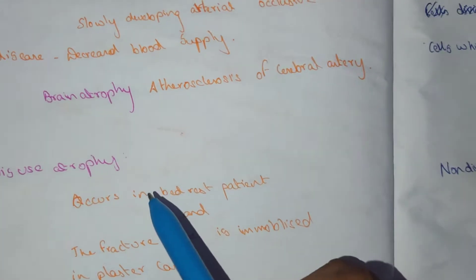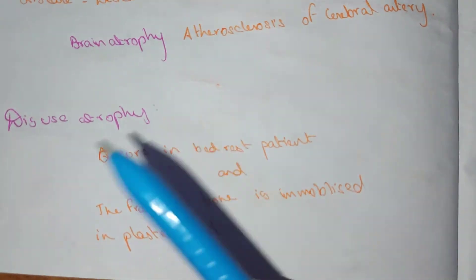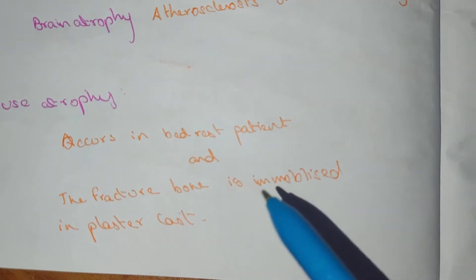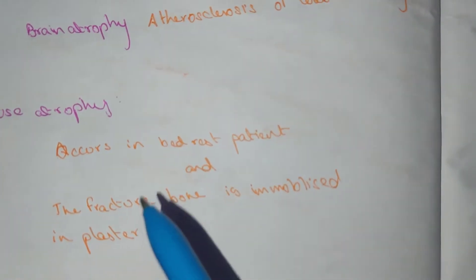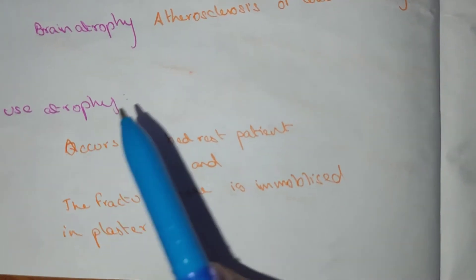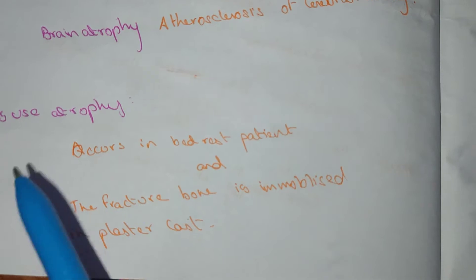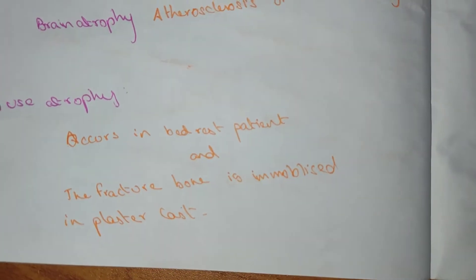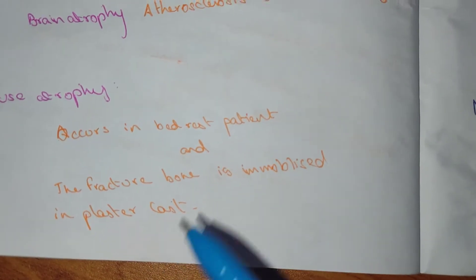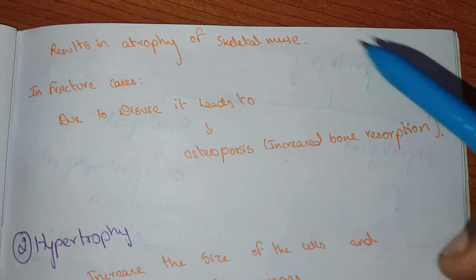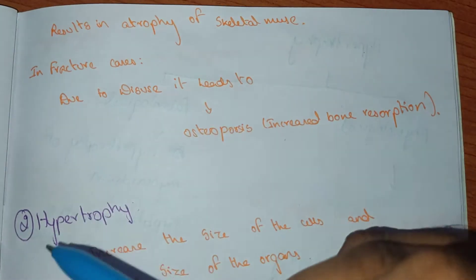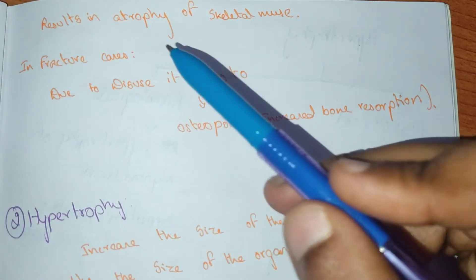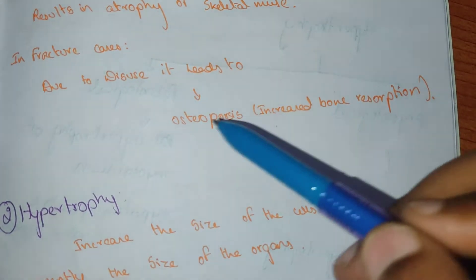Disuse atrophy occurs in bed-rest patients and in fracture cases where an immobilized limb is placed in plaster. If your body parts are not used — for example, if your legs are fractured — that is disuse atrophy. Disuse atrophy results in atrophy of skeletal muscles and leads to osteoporosis in fracture cases.